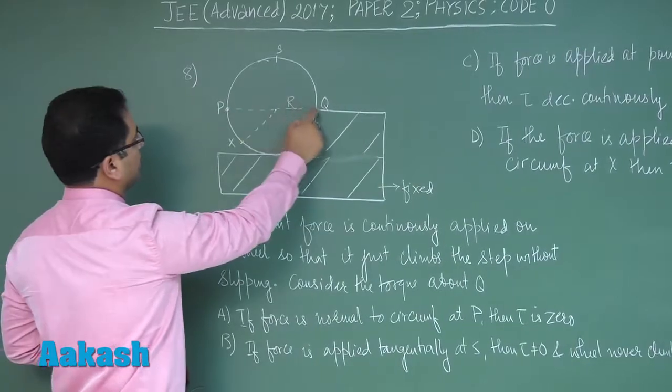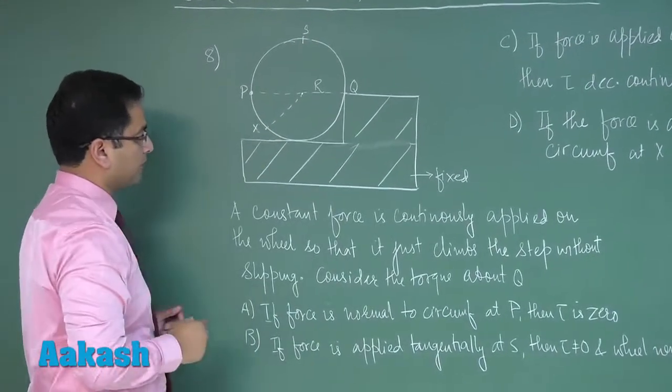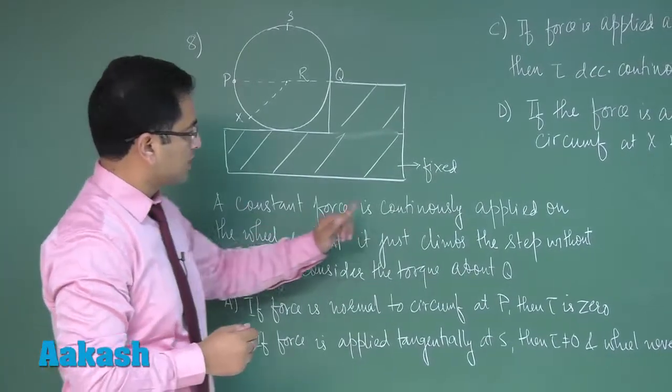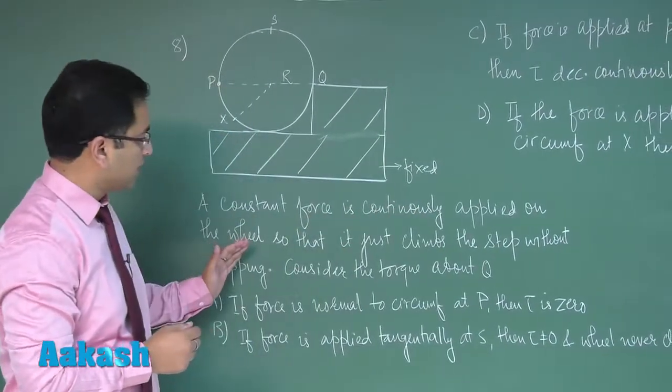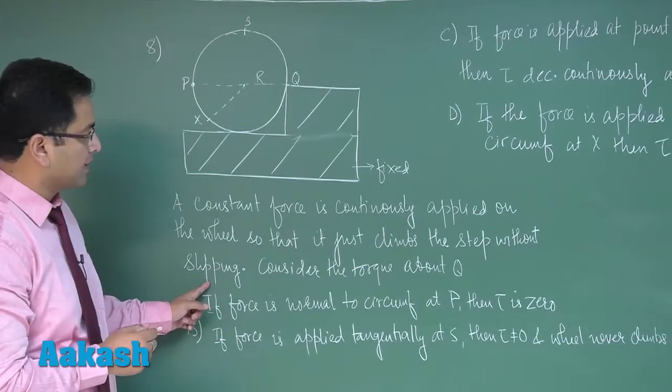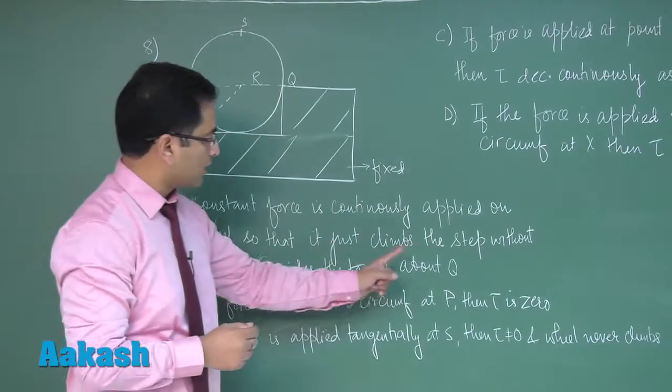Let's see what is the question. It says a constant force is continuously applied on the wheel so that it just climbs the step without slipping. Consider the torque about Q.